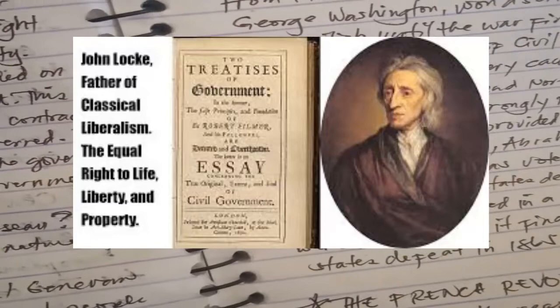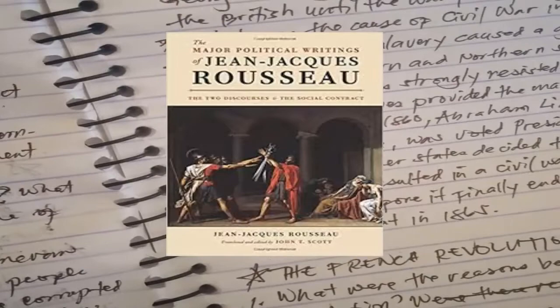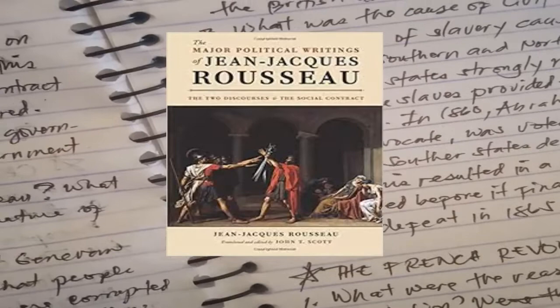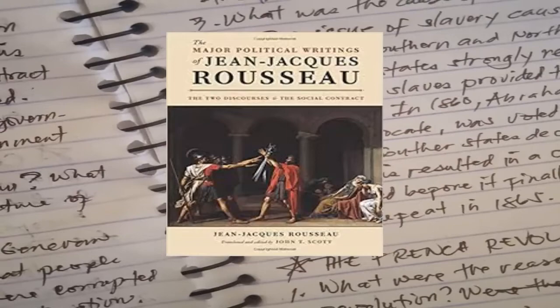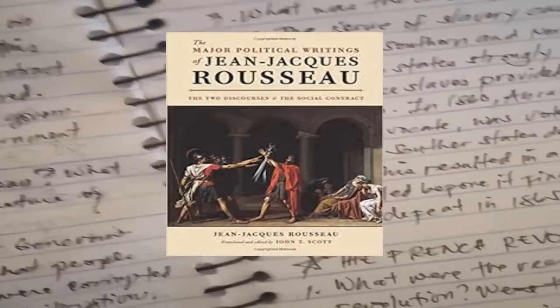Who was Jean-Jacques Rousseau? What was his theory about the nature of people? Rousseau was a radical Genevan philosopher who maintained that people were born naturally good but were corrupted by institutions and enslaved by civilization.